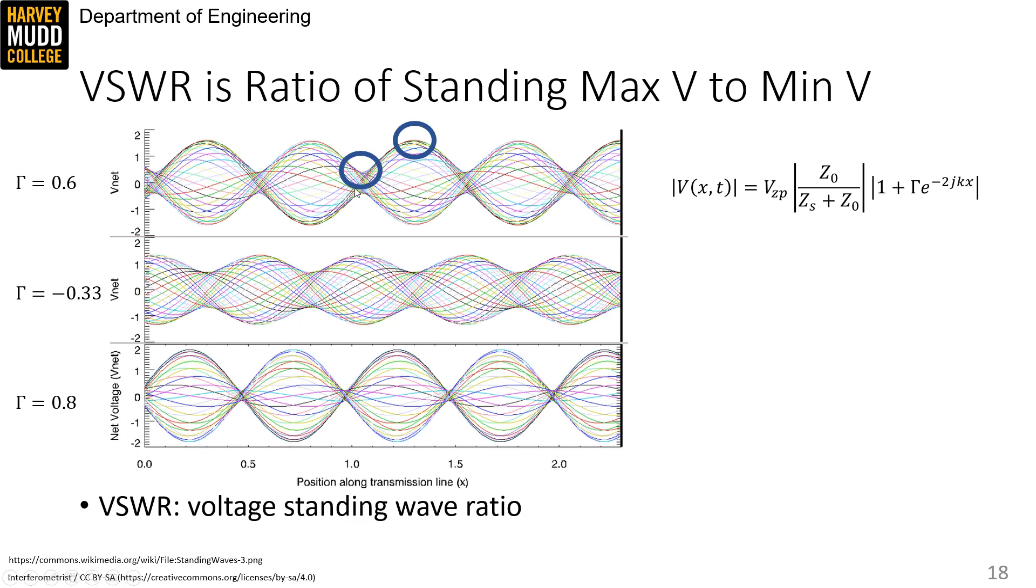Because we already know the peak and trough voltages have the same scaling factor in front of them, and we already know the maximum and minimum value of the x-dependent factor of our envelope, it's pretty easy to calculate their ratio. We find that VSWR is 1 plus the magnitude of gamma over 1 minus the magnitude of gamma.